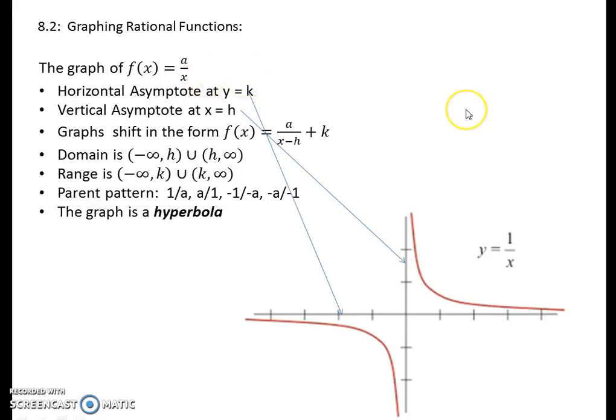Starting off with the basic inverse variation graphs, we see here we've got the graph of 1 over x, which we can generalize to a over x moving forward.